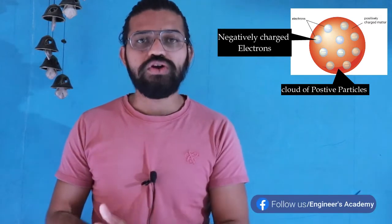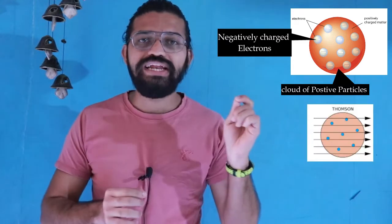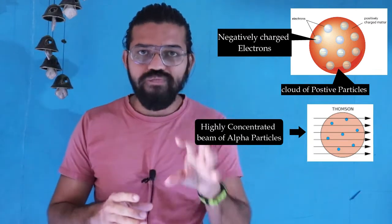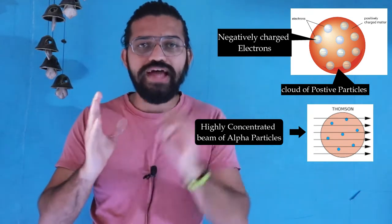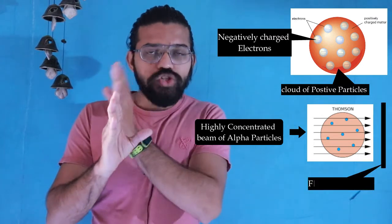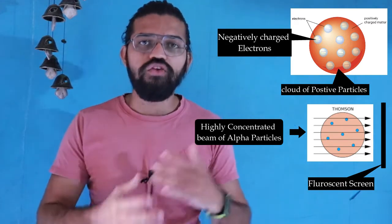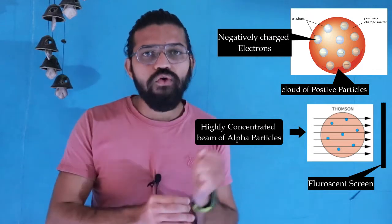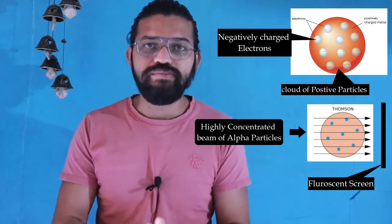The plum pudding model proposed by JJ Thomson states that there is a positively charged cloud, and inside that cloud there are electrons. If that model is correct, and we pass a highly concentrated beam of alpha particles through that atom, the alpha particles should pass straight through and we would get a straight line of rays on the screen on the opposite side. That was the initial statement, which later became false after Rutherford's gold foil experiment in 1911.